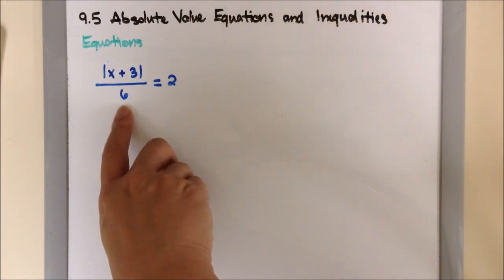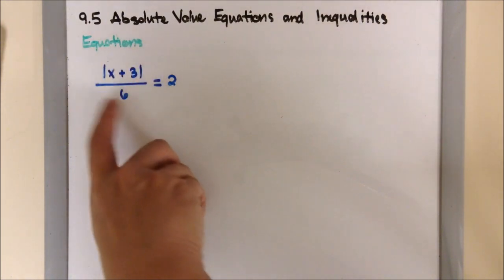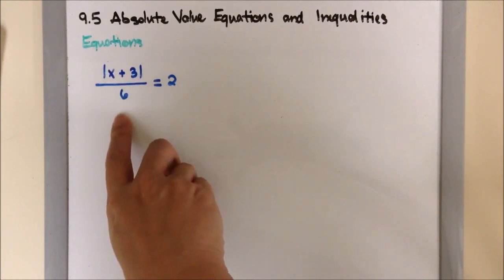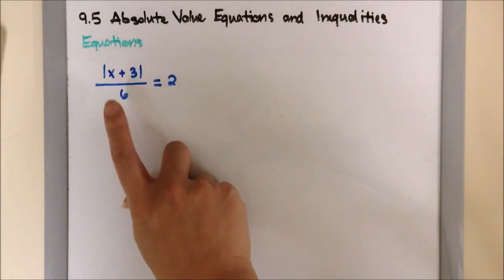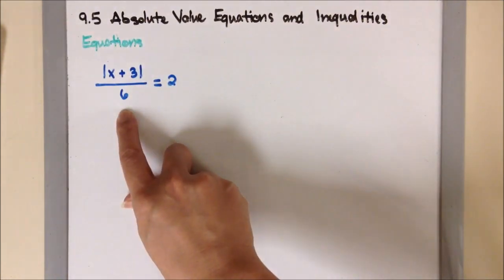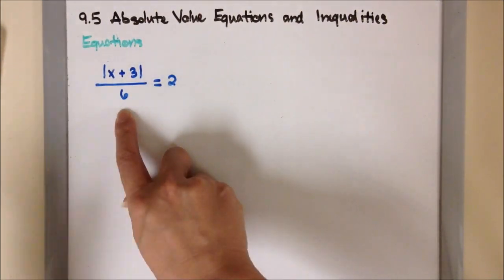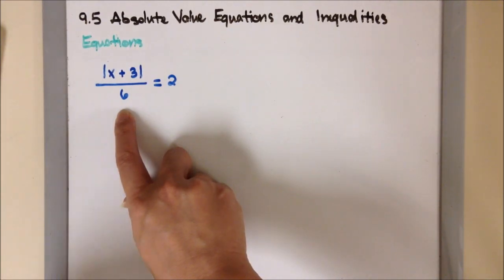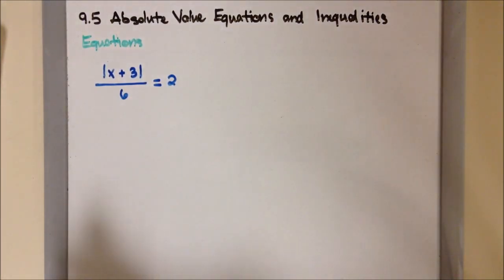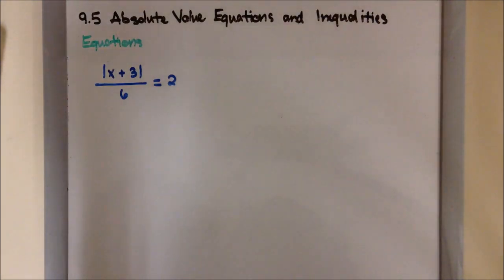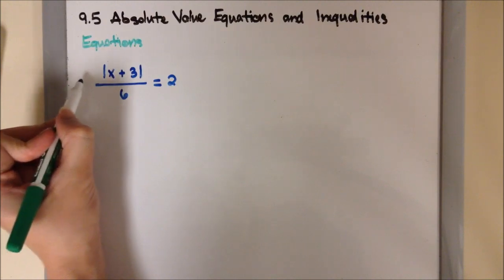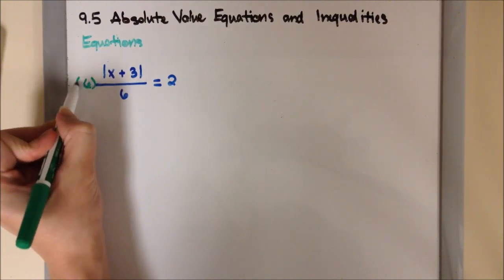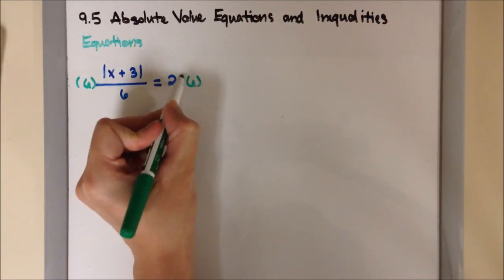So we want to get rid of the denominator so we can get the absolute value by itself. When you have a problem that looks like this kind of fraction, you need to get rid of the denominator. The absolute value does have a number underneath, so in order to get rid of the denominator, I'm going to multiply both sides by the denominator, which is 6.